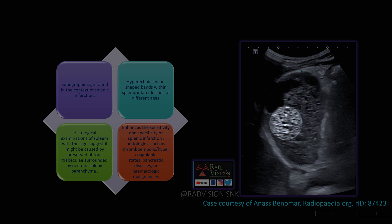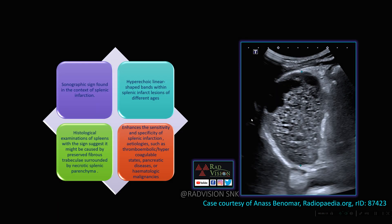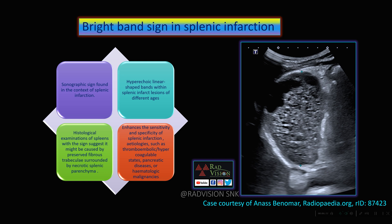In this splenic infarction, the bright bands are preserved fibrous trabeculae and the hypodense areas are necrotic areas. Whenever you see the bright band sign, definitely suspect splenic infarction, which can be seen in multiple thromboembolic cases, hypercoagulable states, pancreatic diseases, or hematological malignancies. Remember the bright band sign in splenic infarction.